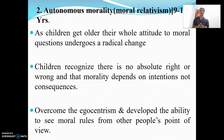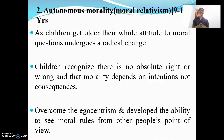The second stage is autonomous morality, or moral relativism, which covers children aged nine to ten years. As children get older, their whole attitude to moral questioning undergoes a radical change — their moral judgment changes a lot. Children recognize there is no absolute right or wrong, and that morality depends on intentions rather than just consequences.